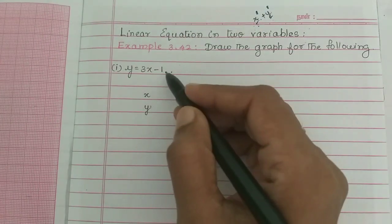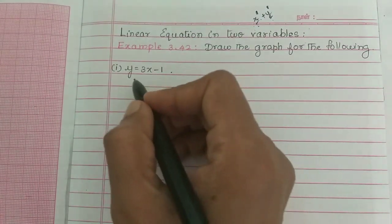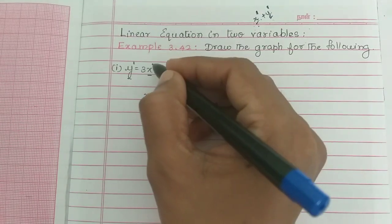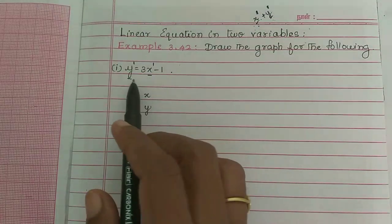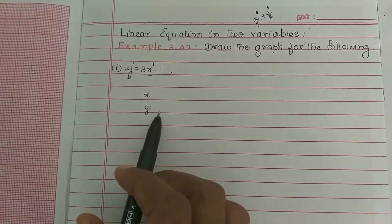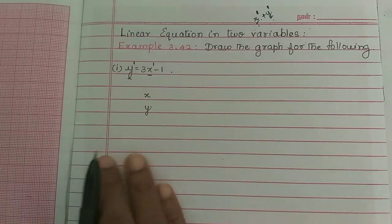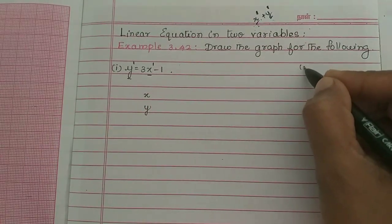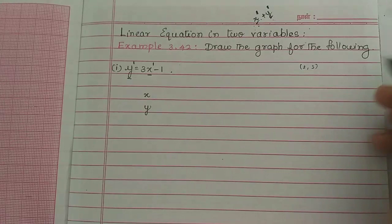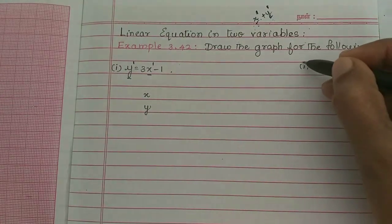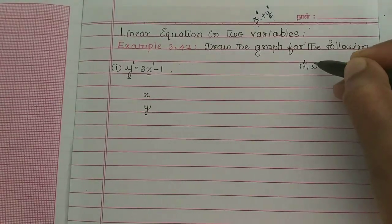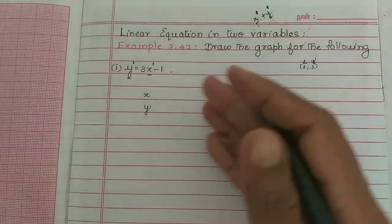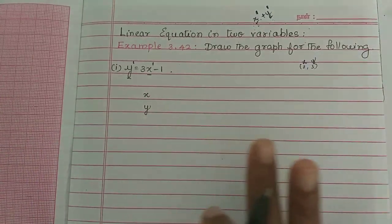So that means y is equal to 3x minus 1. Now, y is equal to 3x minus 1. There are two variables. Here is the graph. We throw ordered pairs.